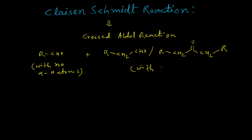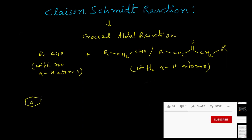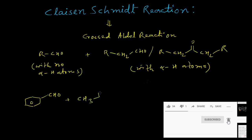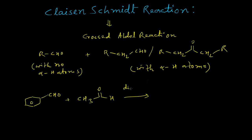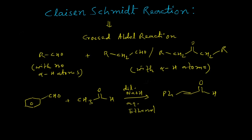Let us consider a typical example of the Claisen-Schmidt reaction. If we react benzaldehyde with acetaldehyde in the presence of dilute sodium hydroxide in aqueous ethanol medium, then we will eventually get an alpha-beta unsaturated aldehyde. This is a typical example of the Claisen-Schmidt reaction.